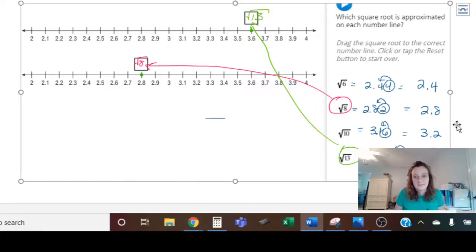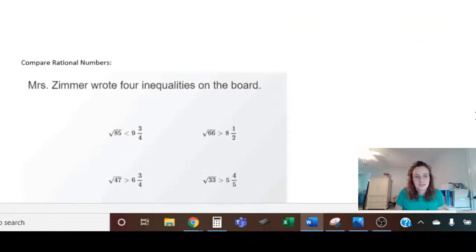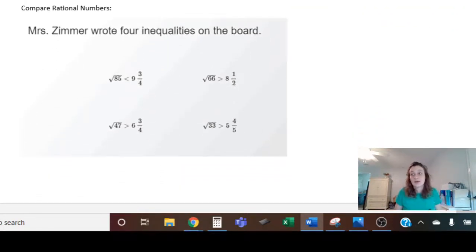Alright, let's scroll on down. And last topic here is we're going to compare rational numbers. Mrs. Zimmer wrote four inequalities on the board - two of them are true. So let's figure out which one it is. Remember, whenever you're comparing numbers, the best thing you want to do is to convert them all to decimals.